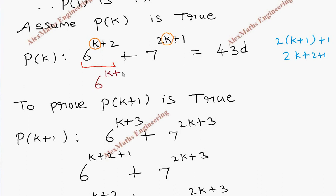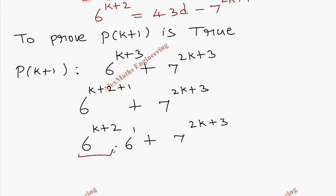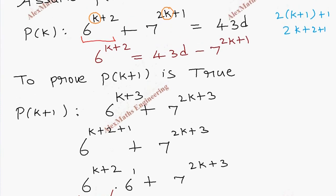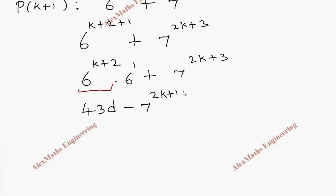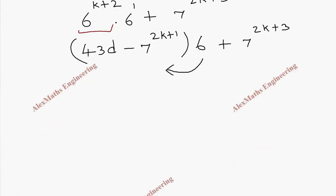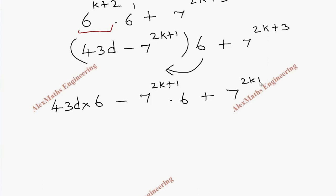From the inductive hypothesis, 6^(k+2) = 43d − 7^(2k+1). Substituting this in, we get (43d − 7^(2k+1)) × 6 + 7^(2k+3). Multiplying inside: 43d×6 − 7^(2k+1)×6 + 7^(2k+3).